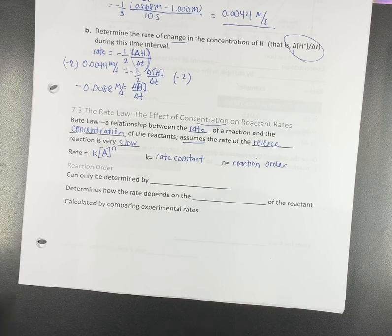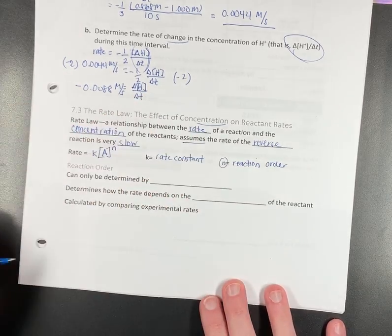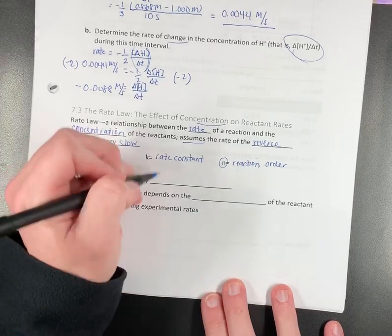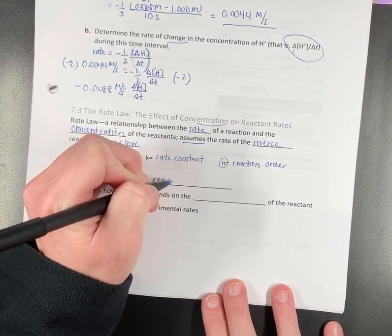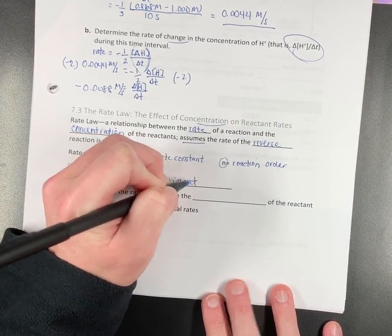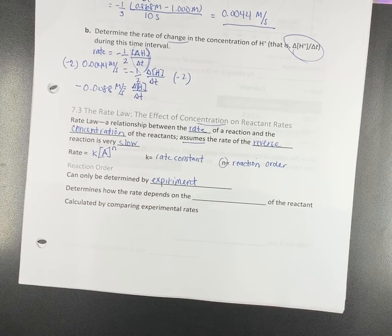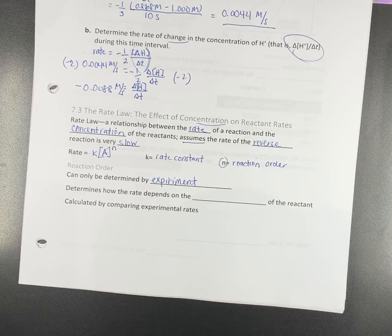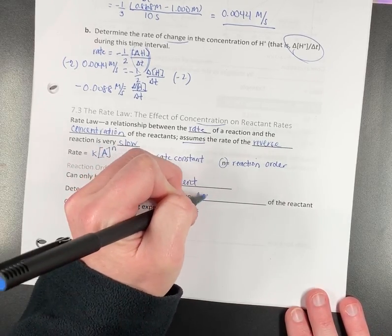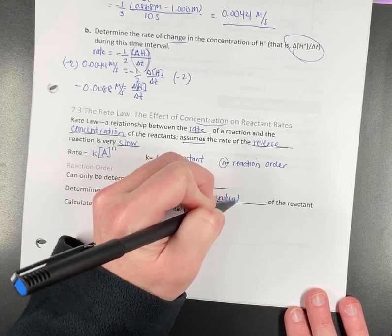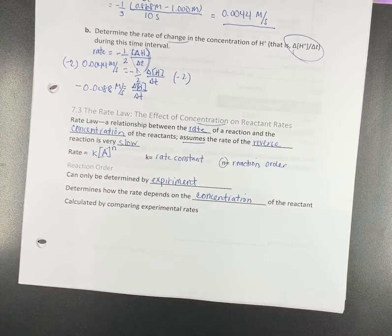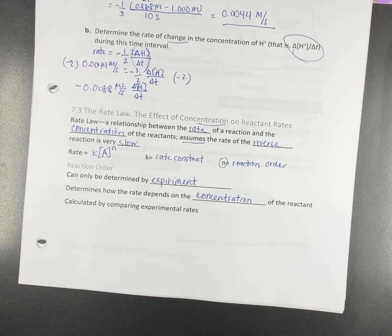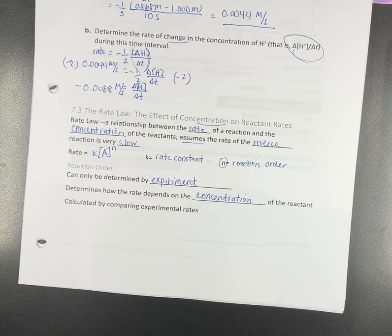Now, a reaction order to figure out what n is, we can only determine that by doing an experiment in the lab. So it determines how the rate depends on the concentration of the reactant in the lab, and then you calculate it. You compare experimental rates.